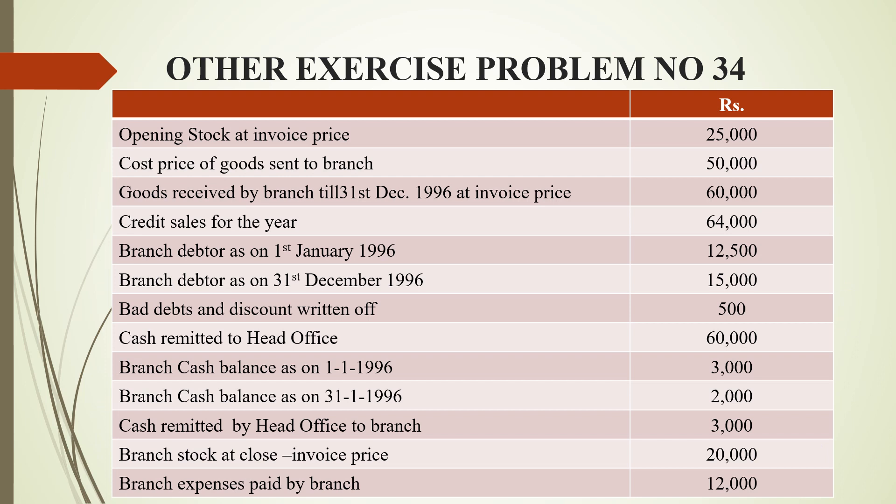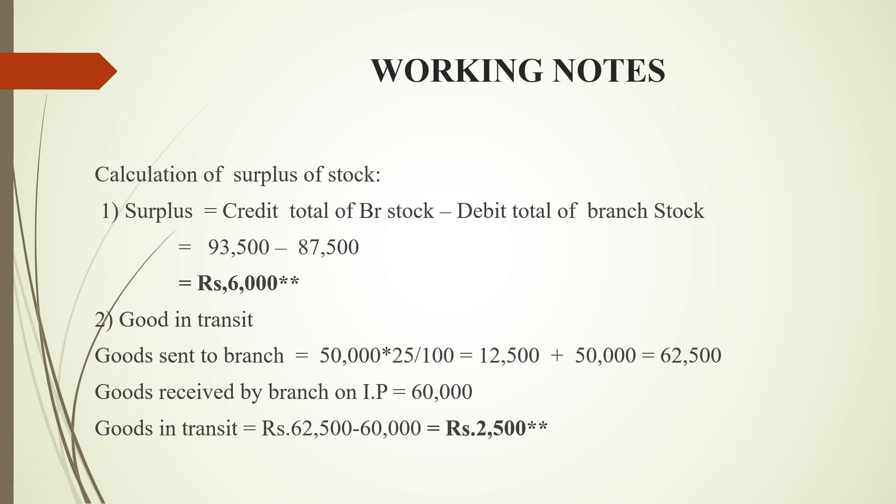The problem gives us: opening stock, invoice price, cost price of goods sent to branch. From this data we have to find goods in transit. Next are credit sales, cash sales (to find out), opening debtors, closing debtors, bad debts, cash remitted to head office, branch cash balance as on 1/1/96, closing cash balance, cash remitted by head office to branch, closing branch stock, and branch expenses.